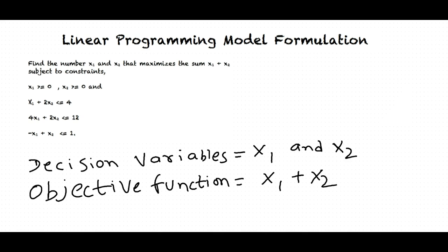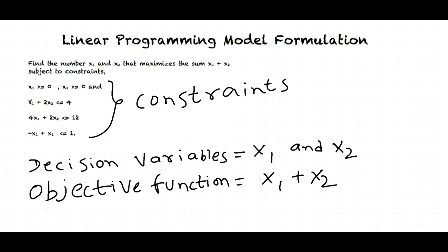What are the constraints? The constraints are the restrictions on the values of decision variables; the values of decision variables must satisfy the constraints. There are five constraints in this example. How do we formulate the problem? Let us formulate the linear programming model with an example.